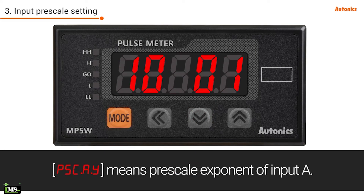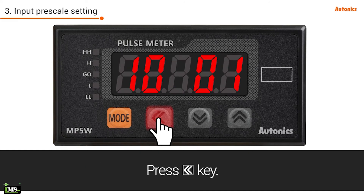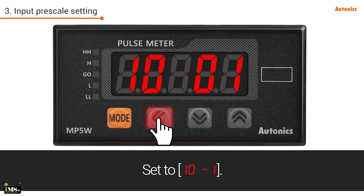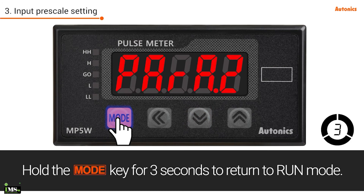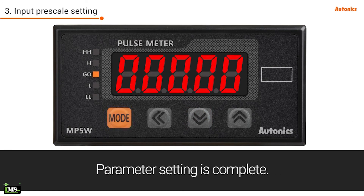PSC.A.Y means per scale exponent of input A. Press the left key and set to 10 to the power of minus 1. Hold the mode key for 3 seconds to return to run mode. Parameter setting is complete.